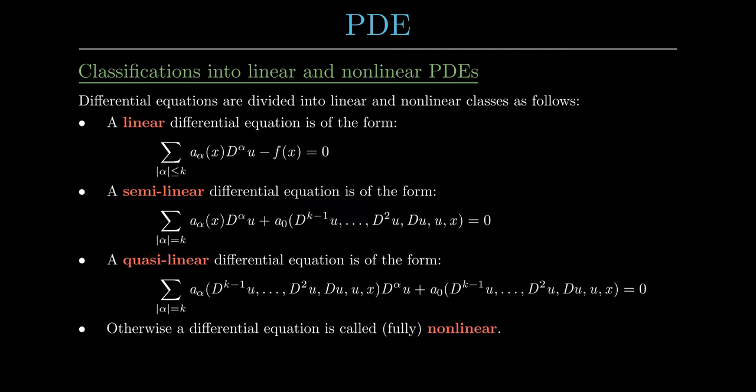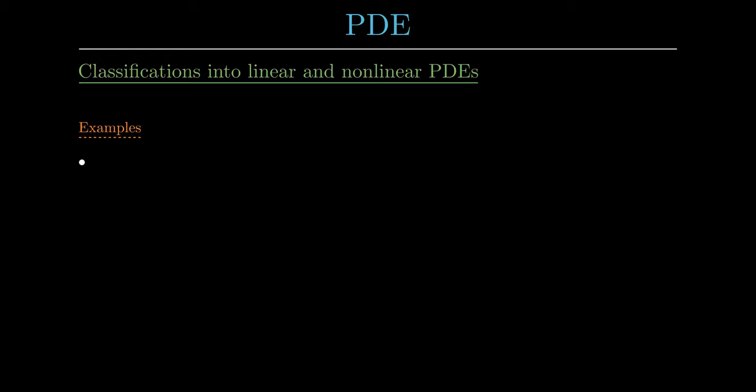A good rule of thumb is: the more nonlinear an equation is, the more difficult the analysis becomes, and the more challenging the design of good numerical methods. The Euler equations, a special case of the Navier-Stokes equations with zero viscosity, are an example of a quasi-linear equation. Here, in front of the spatial derivative, we multiply with the zero-order term v. Thus the Euler equations are quasi-linear, because a lower-order term of the solution variable is multiplied with the derivative of highest order.